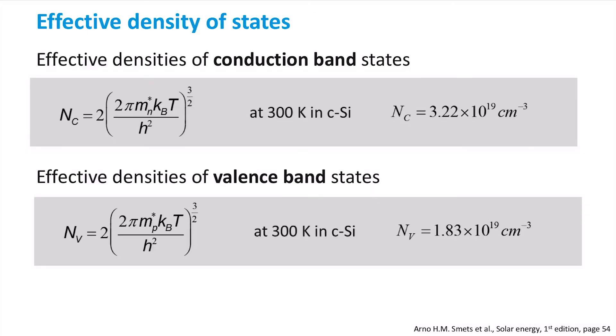There are two new parameters in the equations for carrier concentrations, Nc and Nv. We call these parameters effective densities of conduction and valence band states respectively. As you can notice, they are different from each other, since the effective mass of electrons is different from the effective mass of holes.